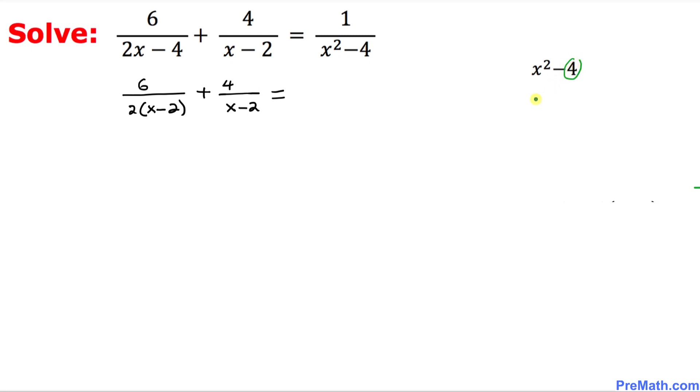This could be written as x squared minus 2 squared. And now this represents the difference of 2 squares. Therefore, I am going to use this fact: a squared minus b squared equals a minus b times a plus b.